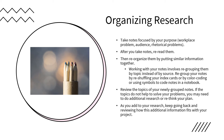Working with your notes involves regrouping them by topic instead of by source. When working on a literature review, you should never go paragraph by paragraph, source by source. Instead, group together things that talk about similar approaches and similar issues. Regroup your notes by reshuffling index cards, color coding, using symbols, or cutting and pasting digital notes — just make sure you keep the original attribution as you move things around, so you know where to find the original source material if you need it.